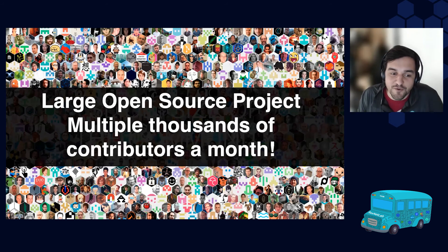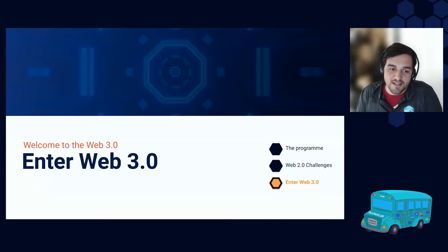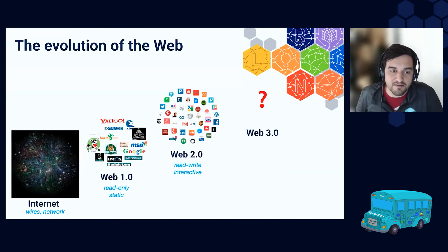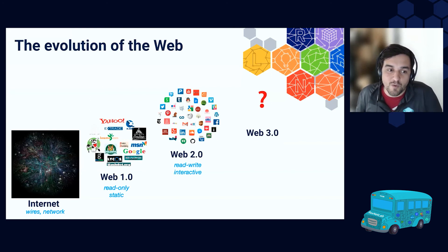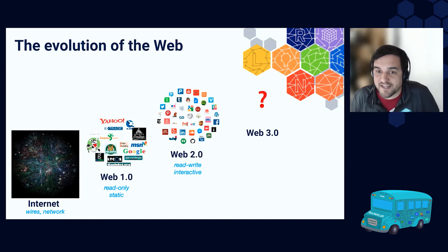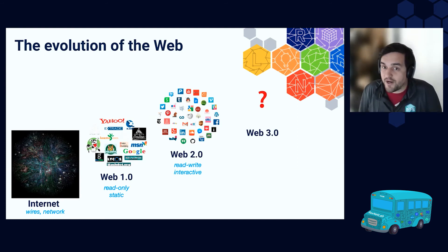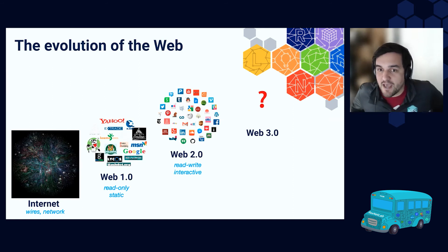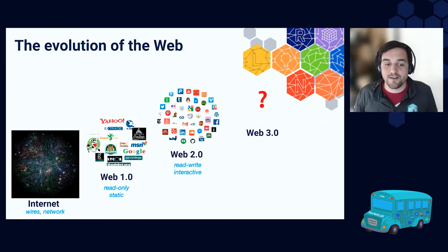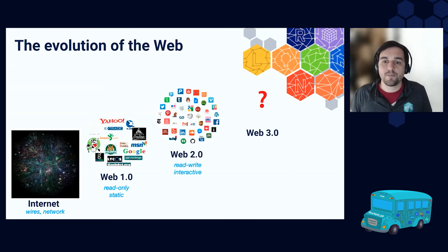IPFS ultimately contributes to the whole revolution that is happening, which is the Web3.0. For those of you who have been on the web for a while, you might be familiar with the evolution from the internet, where we all got connected, to Web 1.0 — a document viewing platform where we could read static content — then to Web 2.0, which is what we use today: the read-write interactive web, where we have apps, collaboration, messaging, and document sharing. Now there's a third revolution: the Web3.0, and this is something very new that is really happening now.